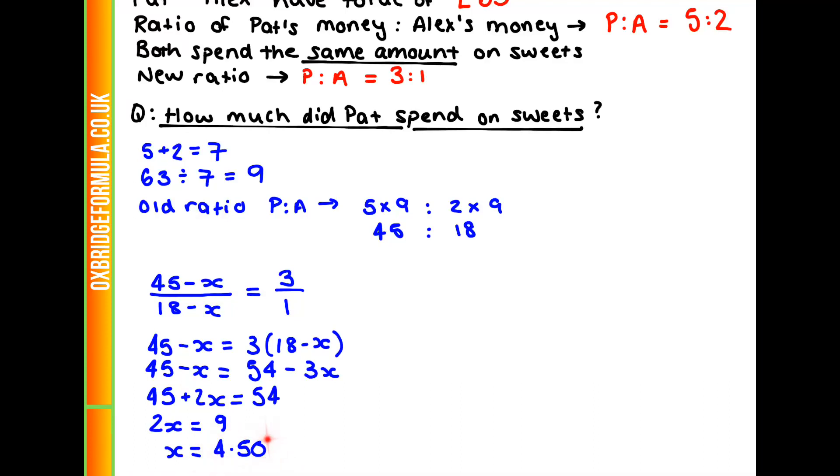That's how much we know they both spent, so that's going to be our final answer. X equals 4.50. They both spent £4.50, so our final answer is E.